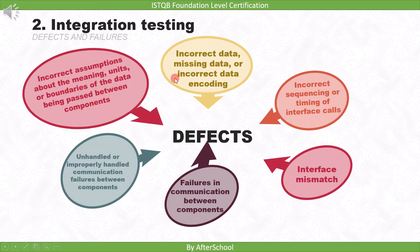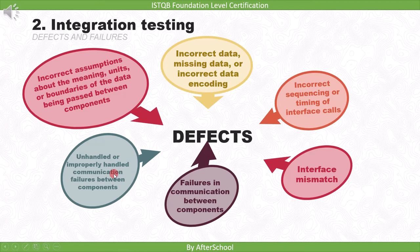As we saw in the first example, one module was expecting a character value while the other was looking for integer values. In total, there are six defect types found during integration testing: incorrect or missing data or incorrect data encoding, incorrect sequence or timing of interface calls, interface mismatch, failures in communication between components, unhandled communication failures, and incorrect assumptions about the meaning, units, or boundaries of data passed between components.